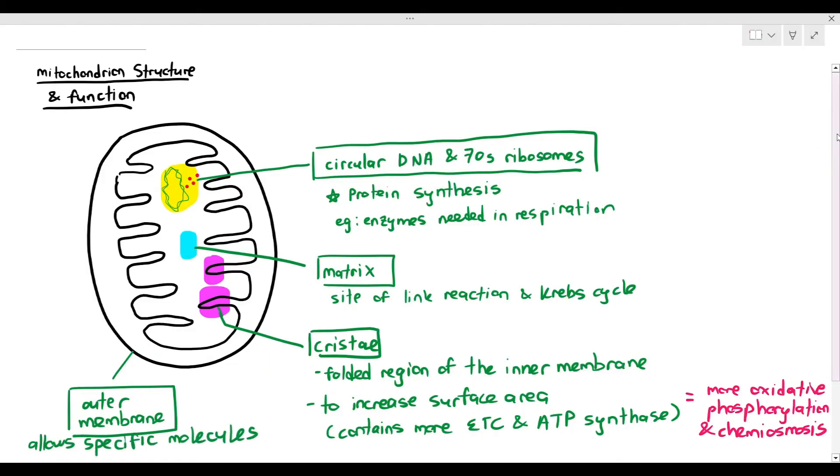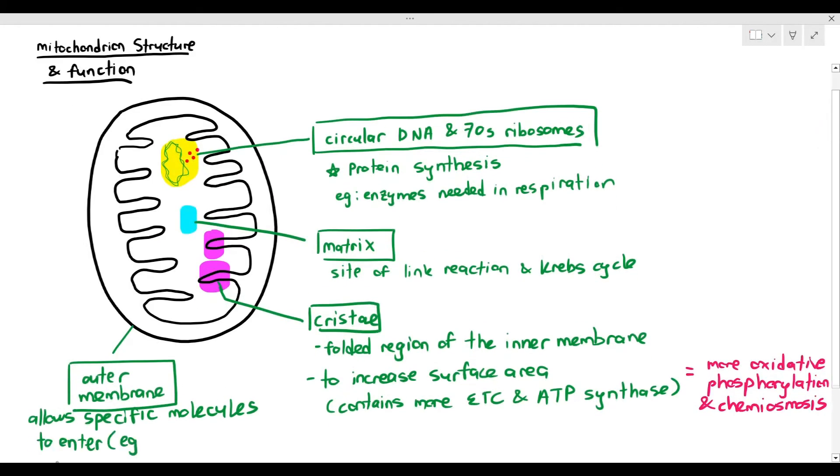Then you also have the outer membrane. It forms a partially permeable membrane that only allows specific molecules to enter the mitochondria. For example, pyruvate. If you remember, pyruvate is produced in glycolysis in the cytoplasm, and it only allows the pyruvate to cross through the outer membrane and then enter the matrix. Reduced NADs will be able to do so as well.